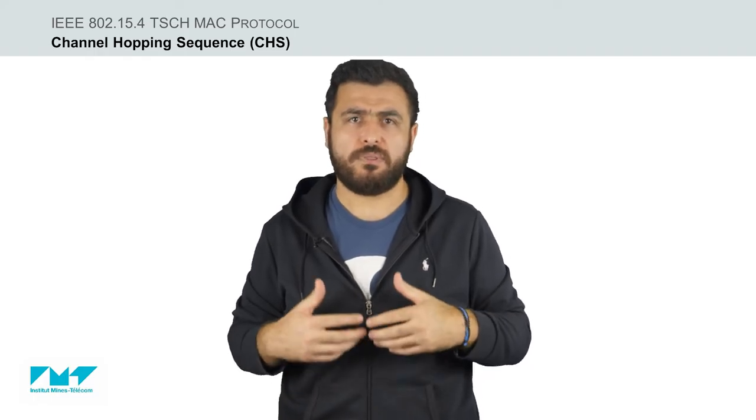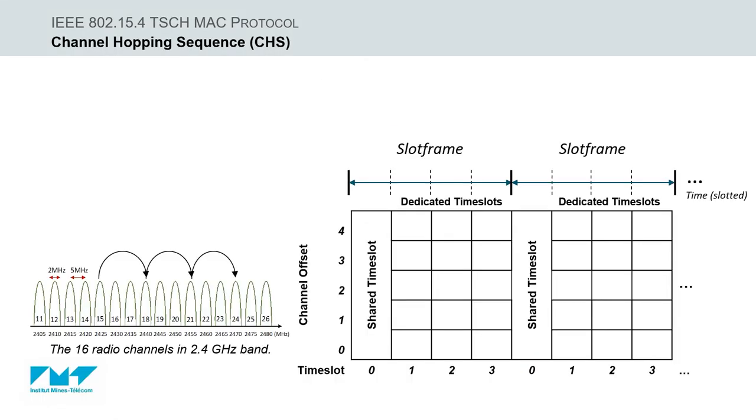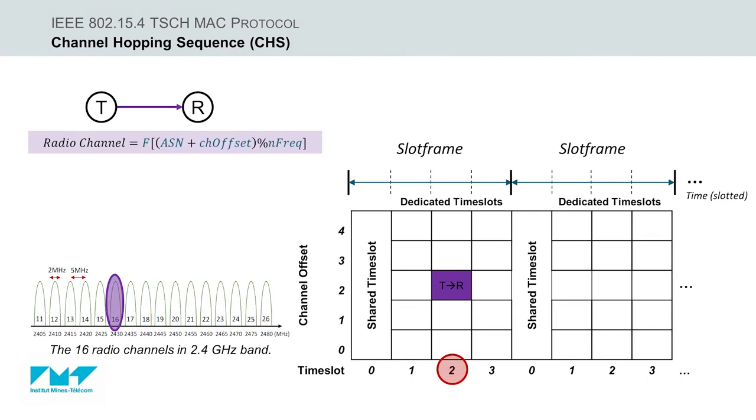Next, the channel hopping approach provides increased reliability to multipath fading and external interference. It is handled by TSCH through a channel hopping sequence, where at each time slot, the physical radio channel to be used by the radio is computed by the following equation.